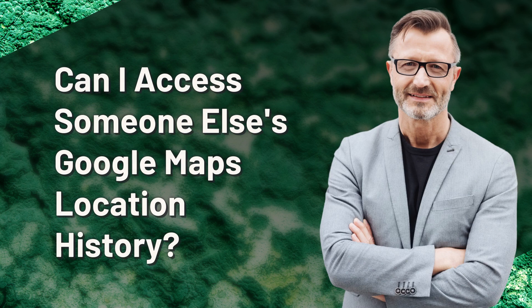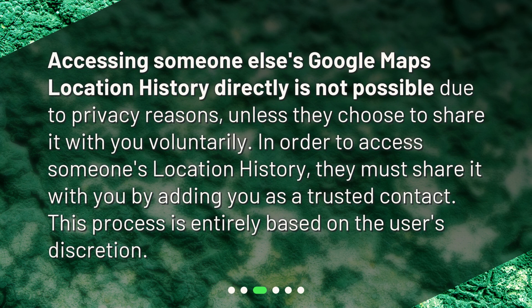Can I access someone else's Google Maps location history? Accessing someone else's Google Maps location history directly is not possible due to privacy reasons, unless they choose to share it with you voluntarily. In order to access someone's location history, they must share it with you by adding you as a trusted contact. This process is entirely based on the user's discretion.